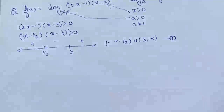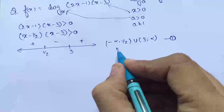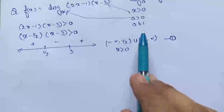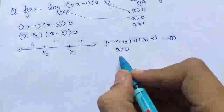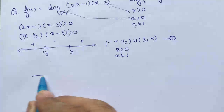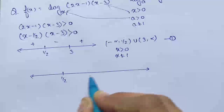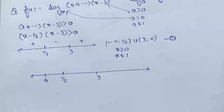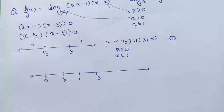Second condition: a > 0 means x > 0. Third condition: a ≠ 1 means x ≠ 1. So now we find the intersection of all three conditions.